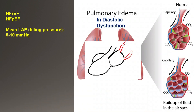As mentioned in part one, heart failure is divided into two categories: systolic and diastolic. In systolic, we have a pumping problem, and in diastolic, a filling problem.